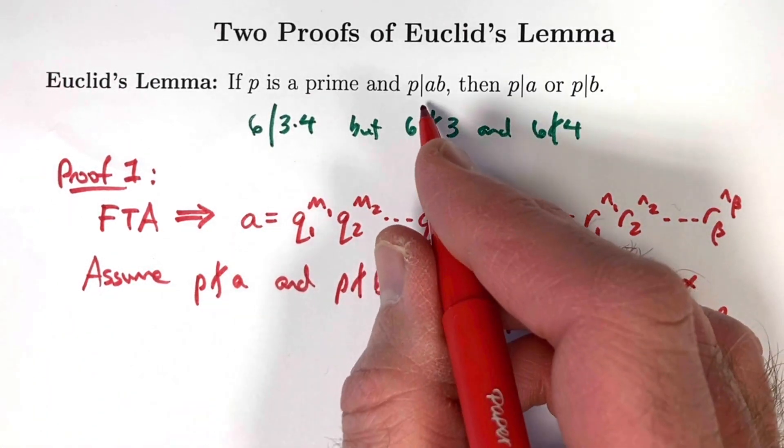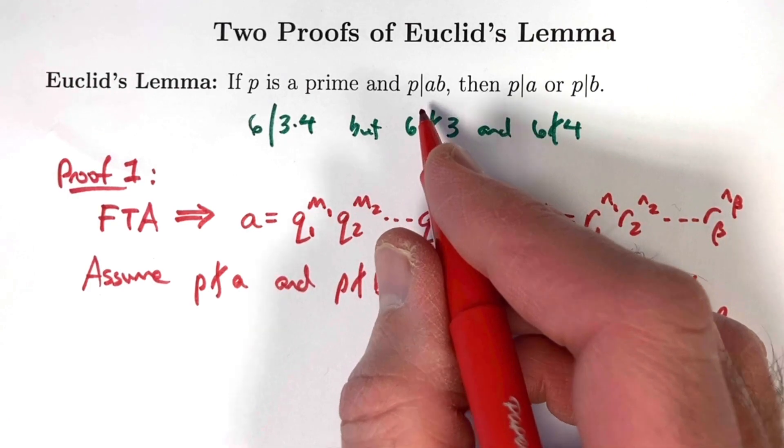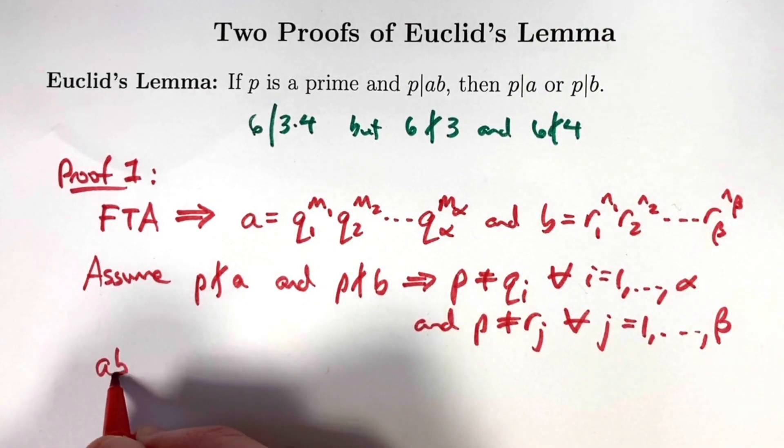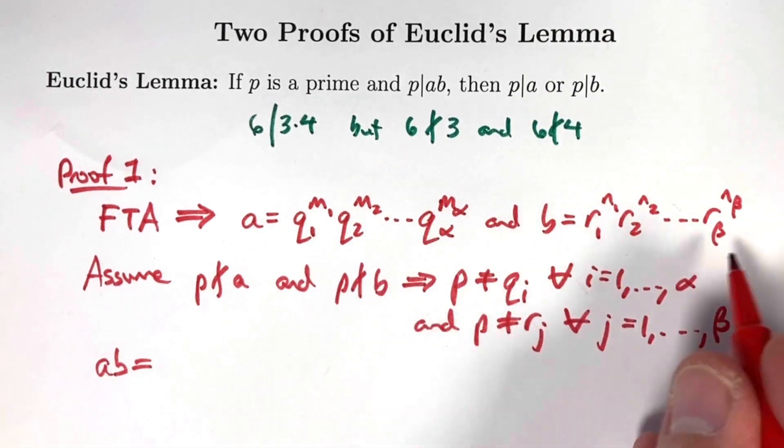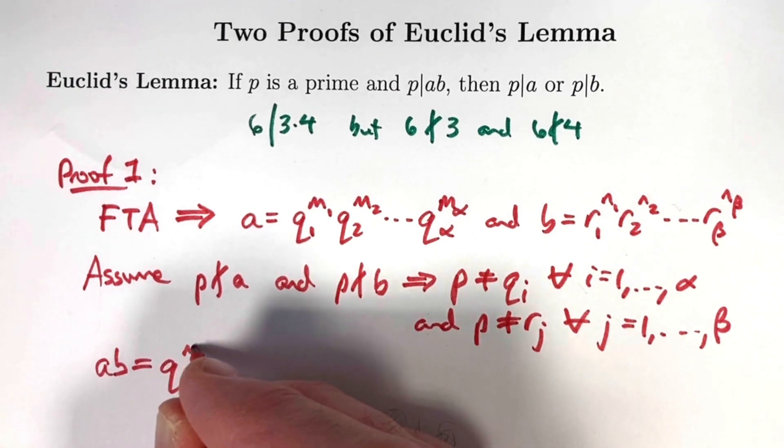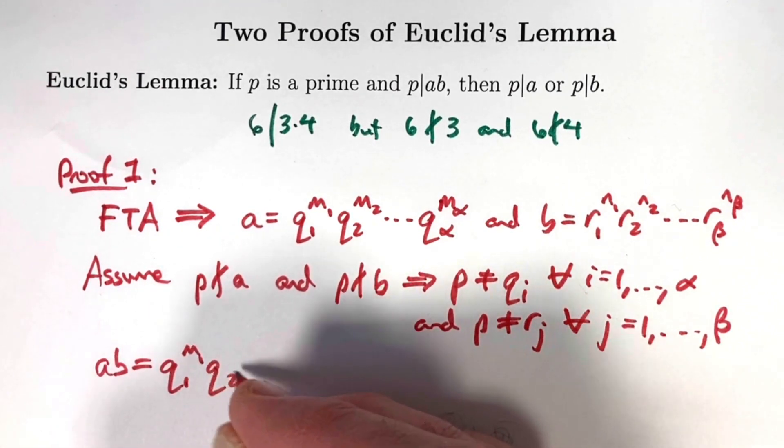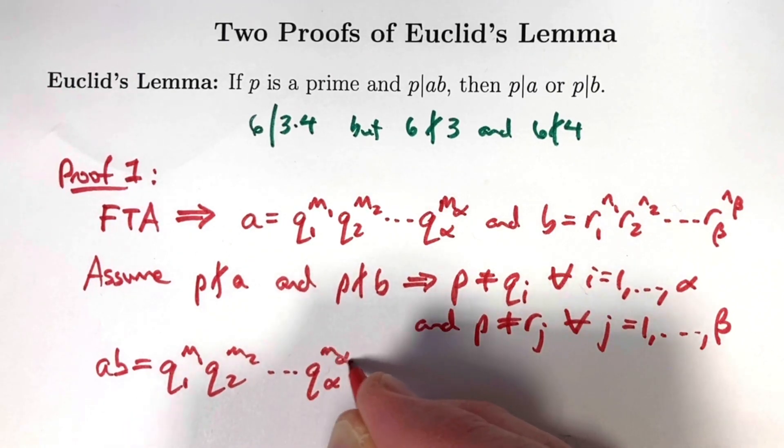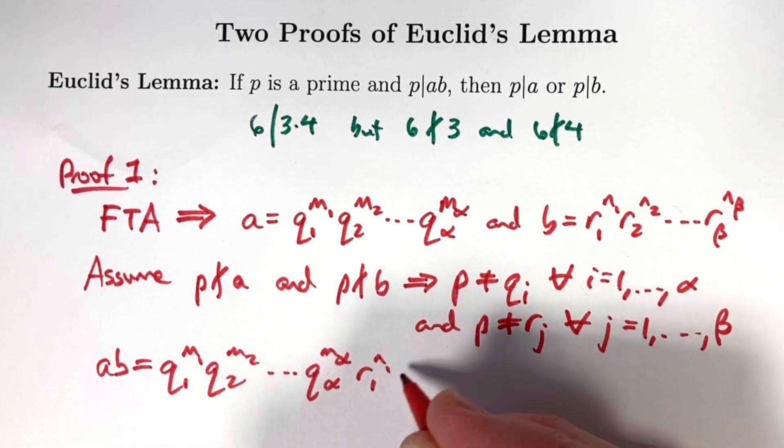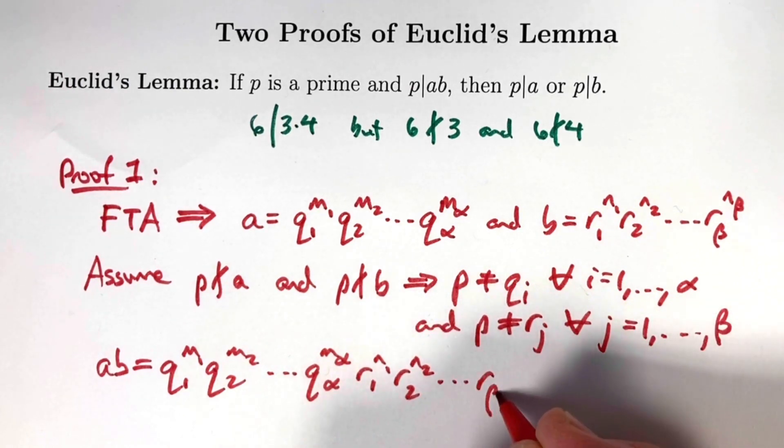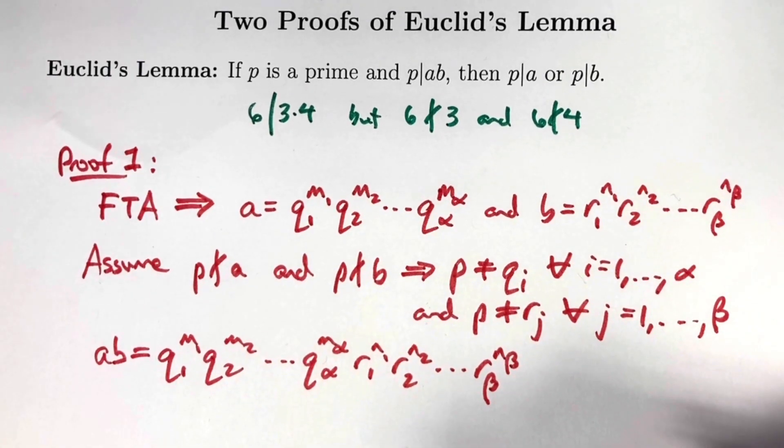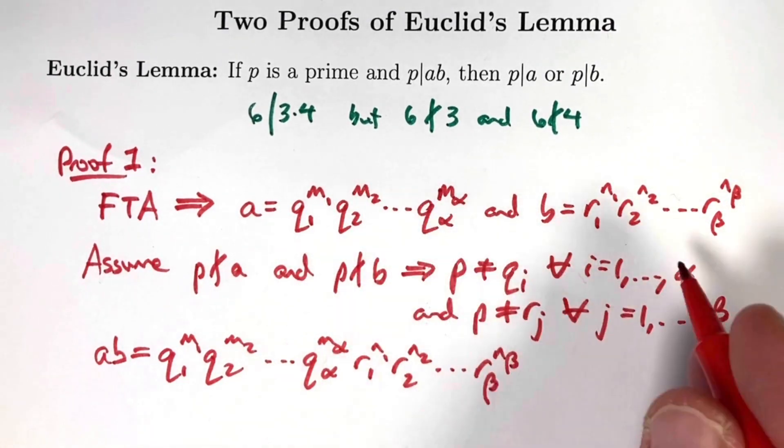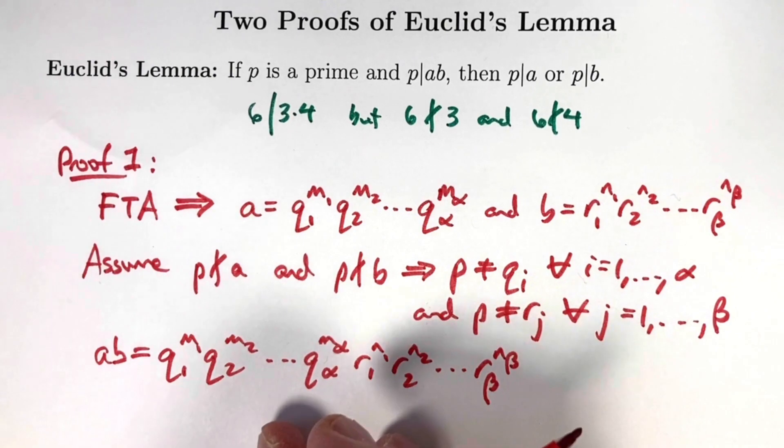That's what follows if we assume p does not divide a and p does not divide b. The goal is to show p does not divide a times b. Well, a times b is the product of all these things. Now again, some of the qs could equal some of the rs, but we don't have to really rewrite this in any other kind of fancy way based on that assumption.